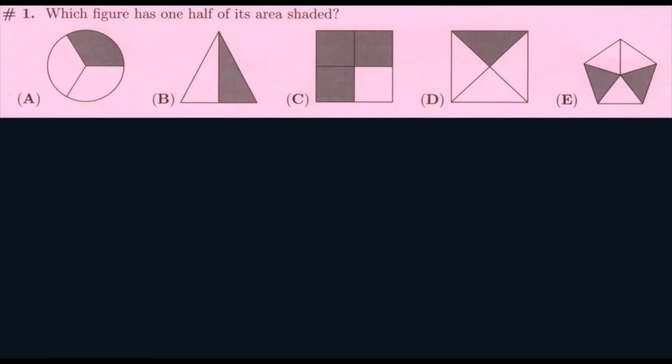Okay, the first question: which figure has one-half of its area shaded? So, A has three parts and one part of the three is shaded, so it would be 1 over 3 or 1 third, so that's not a half. B has two parts and one of the two parts is shaded, that's one-half. So, our answer would be B.